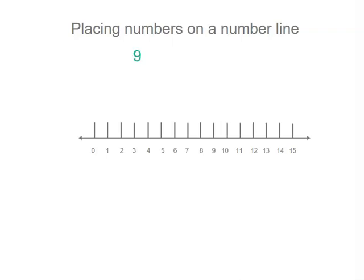So if I place 9, I know it's lower than 10. So I might look for 10, and then I can find 9 and put a mark there. 7 is near 9, so I can place my mark there.